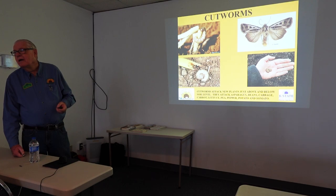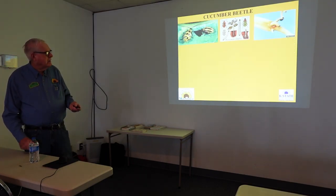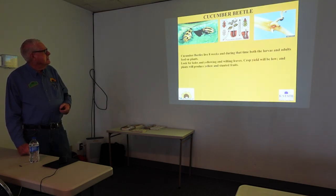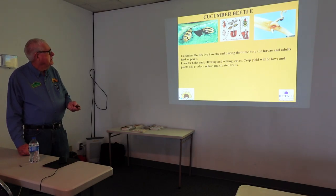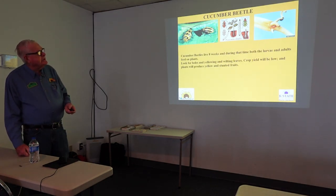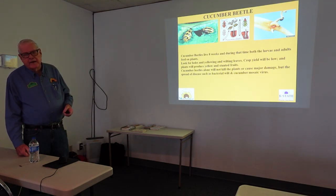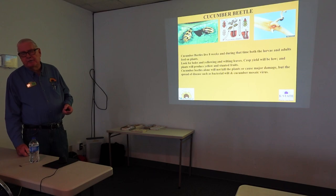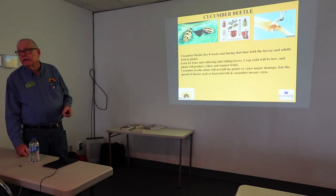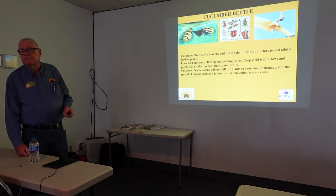Audience comment: Eggs can be laid anywhere if the vine touches the ground, so trellising would help block what has to be in the ground. Cucumber beetle — they only live eight weeks, and during that time both the larva and adults feed on plants. Look for holes in yellowing and wilting leaves. The crop yield will be low, and plants will produce a yellow or stunted fruit. The beetle damage alone won't necessarily kill the plant, but they spread two serious diseases — bacterial wilt and cucumber mosaic — and that's what usually winds up killing a lot of the plants.